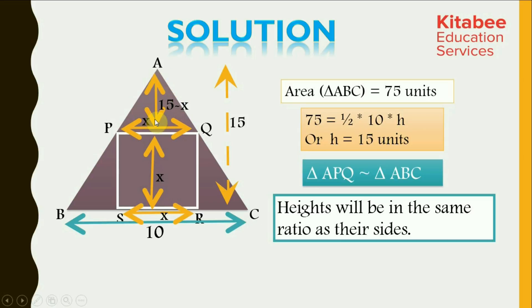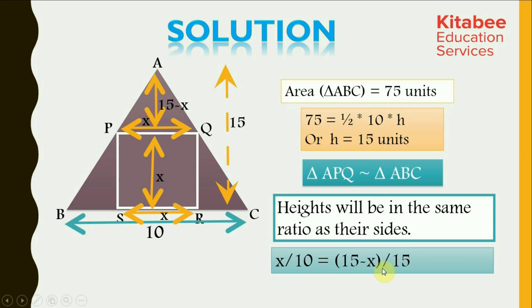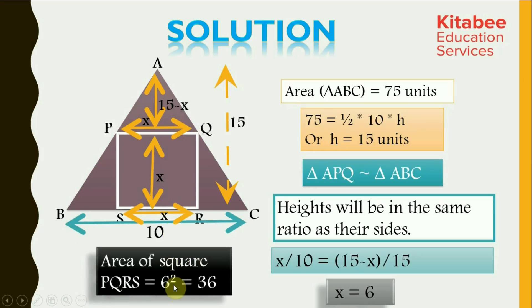We can say that X by 10 would be equal to 15 minus X by 15. On solving the equation, we get the value of X equal to 6 units. X, which is the side of the square, comes out to be equal to 6 units. Thus, area of PQRS would be equal to 6 squared, which is equal to 36 units, as area of a square is A squared where A is the side length. With this we come to the end of our lecture — this was all about the topic similarity.